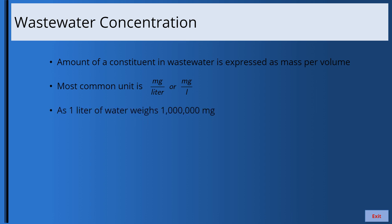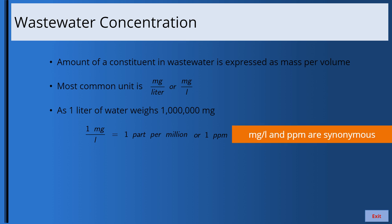One liter of water weighs one million milligrams, so a 1 milligram per liter concentration is equivalent to one part per million. Therefore, 1 mg/L and 1 ppm are the same — milligrams per liter and ppm are synonymous. A 1 million milligrams per liter would be 100%, and 1% would be 10,000 milligrams per liter.